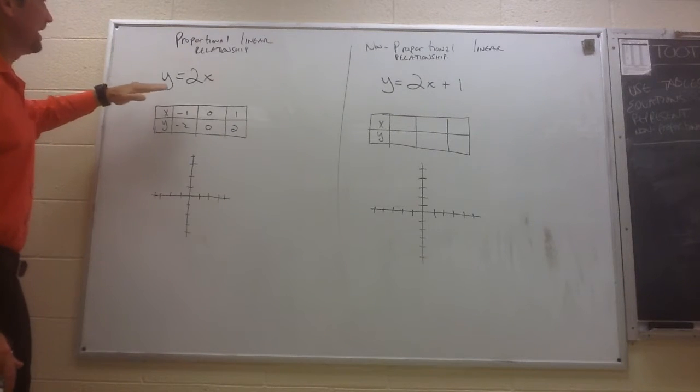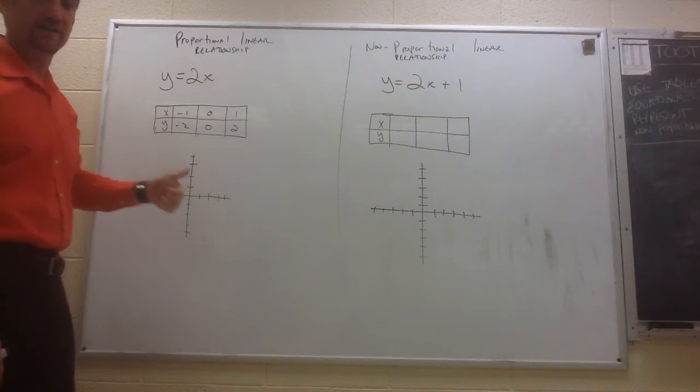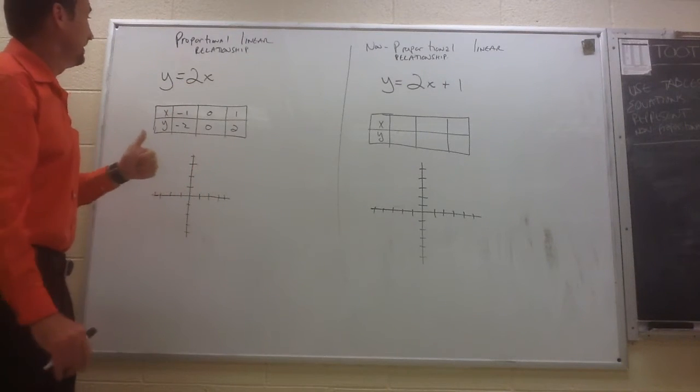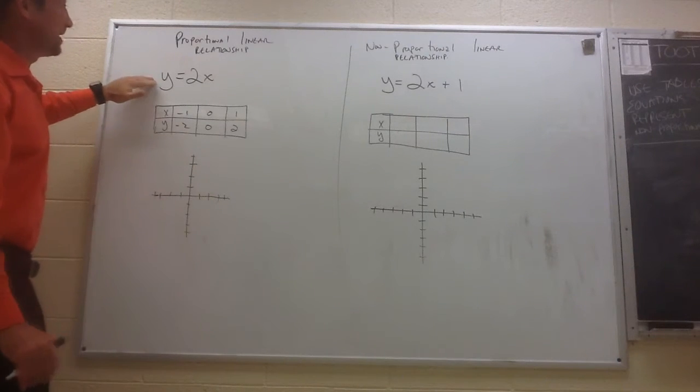When we have an equation, it's written in the form y equals kx. k is your constant of proportionality, it is your unit rate, and it would also be your slope.